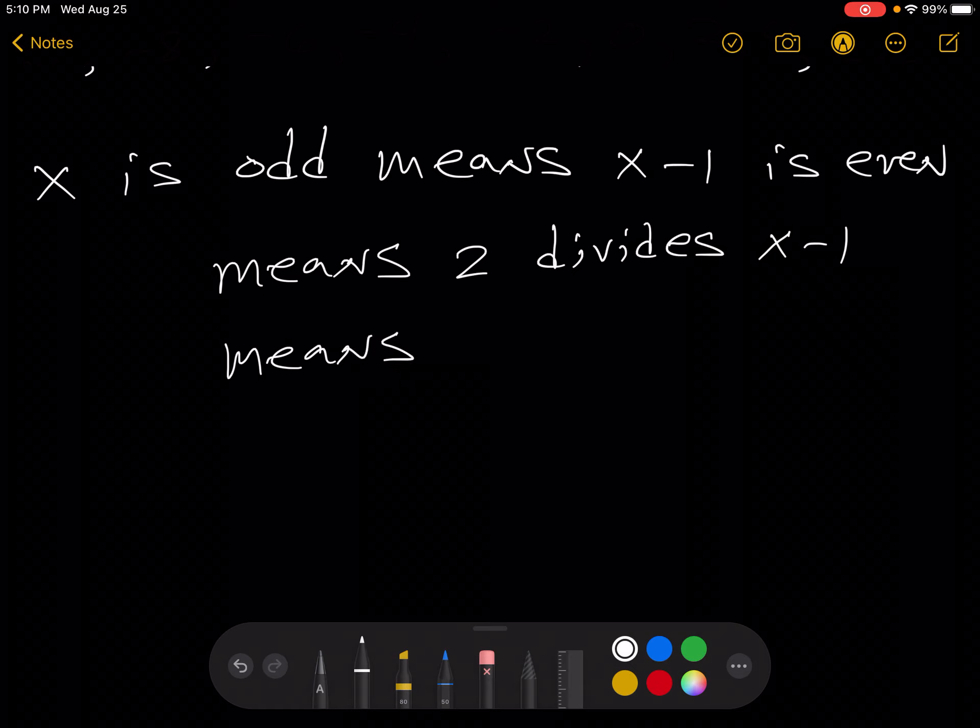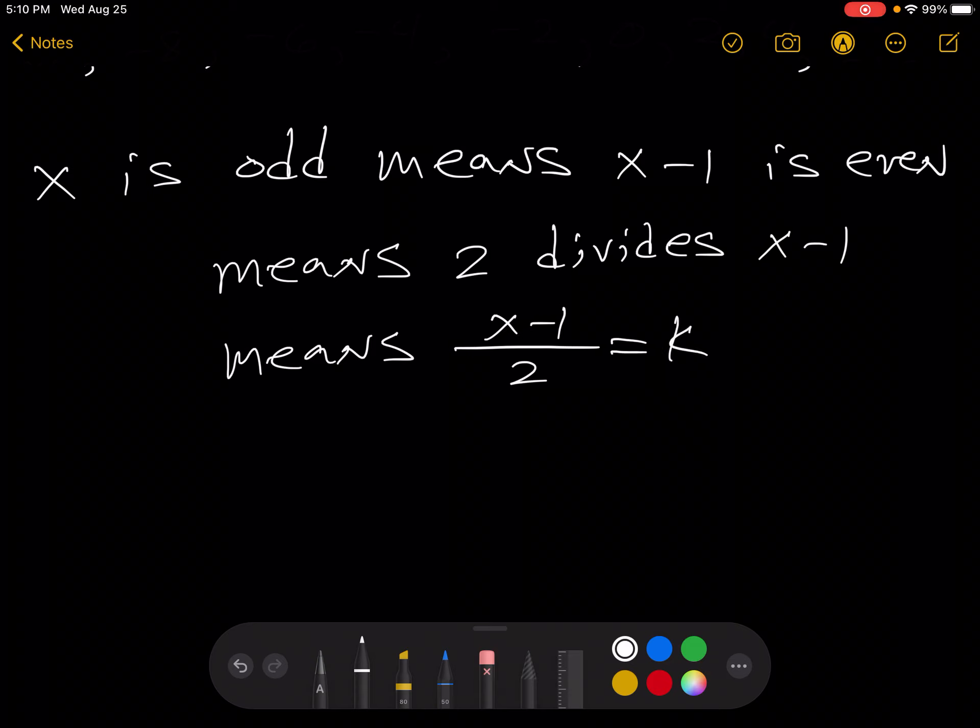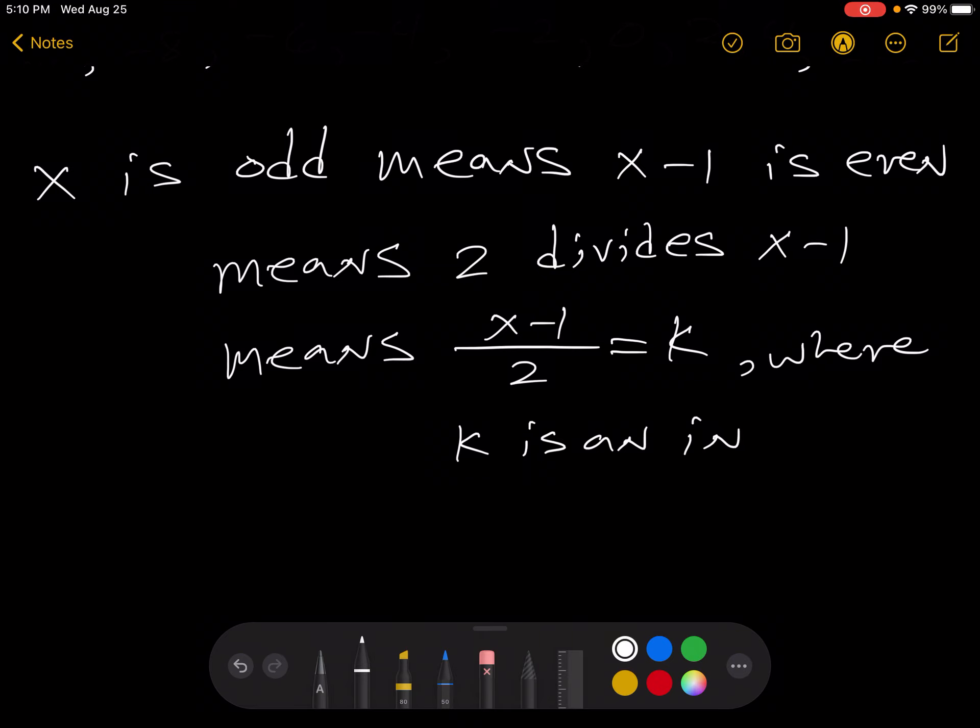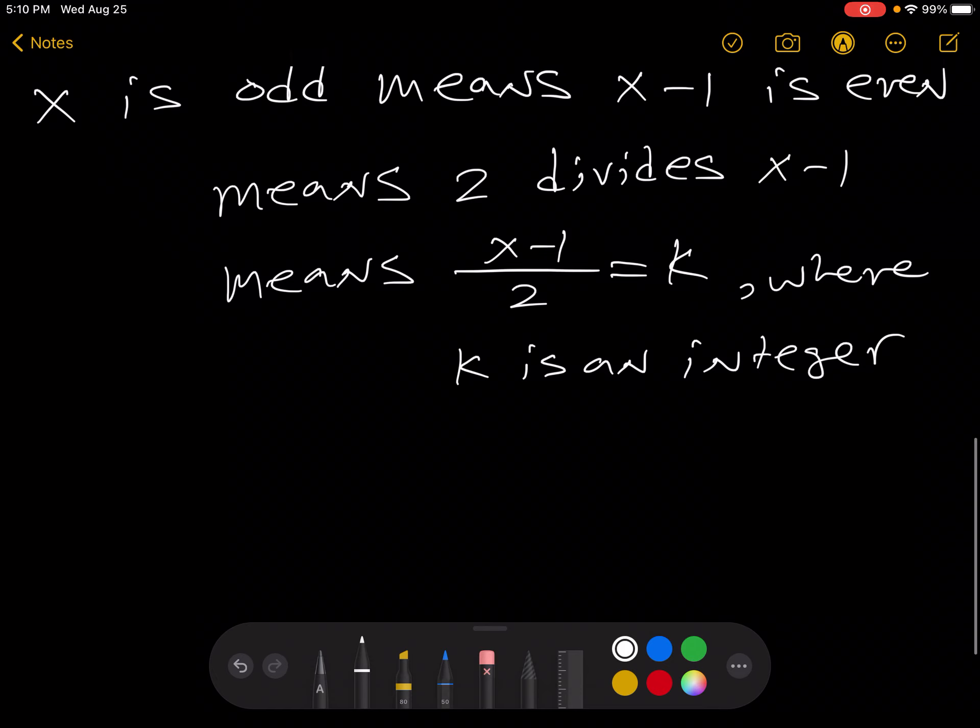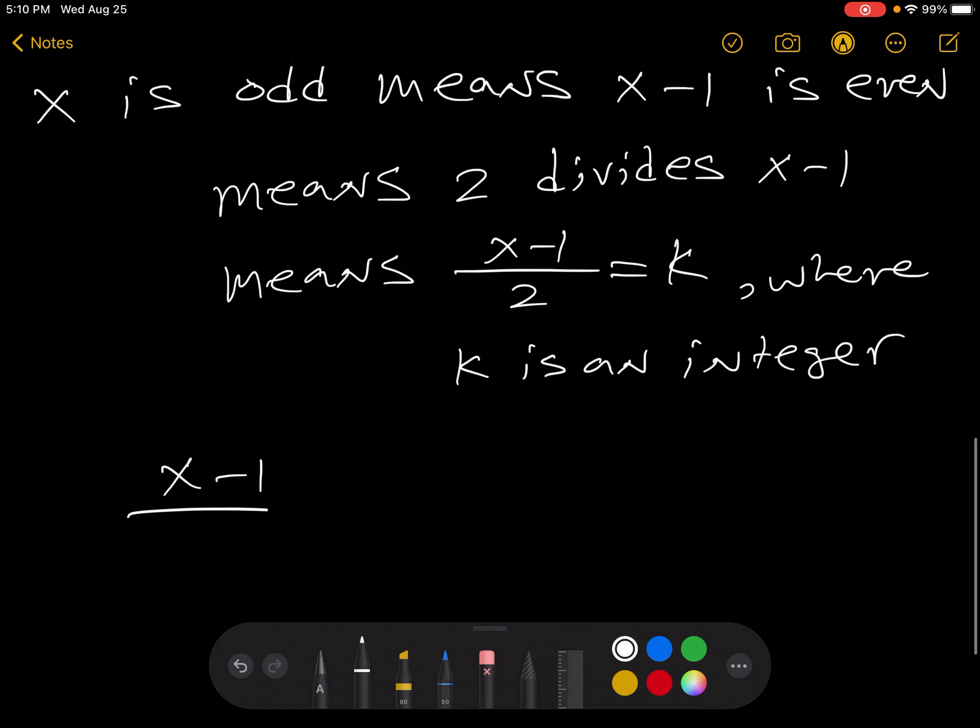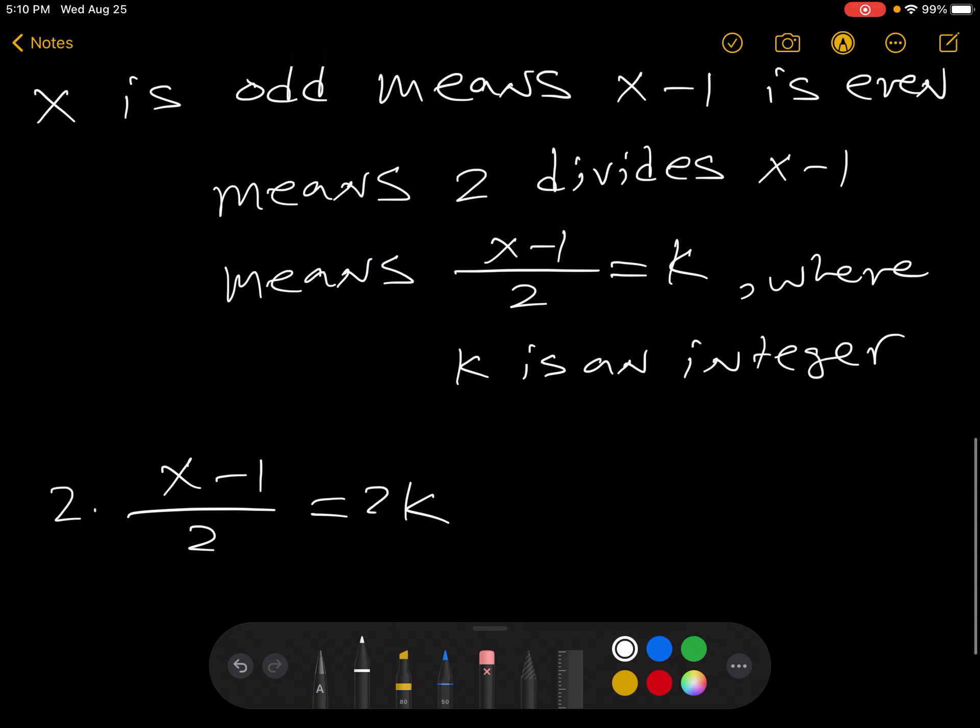Well, this means that x minus 1 over 2 equals k, where k is an integer. Now, x minus 1 over 2 equals k, we can multiply both sides by 2, those cancel. Now we have x minus 1 equals 2k.